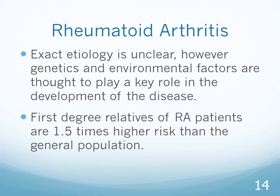The exact etiology of rheumatoid arthritis is unclear. However, genetics and environmental factors are thought to play a key role in development of the disease. There is an atopic component — if a family member has RA, there is a greater chance that other family members will also have it. First-degree relatives of RA patients are one and a half times higher risk than the general population.